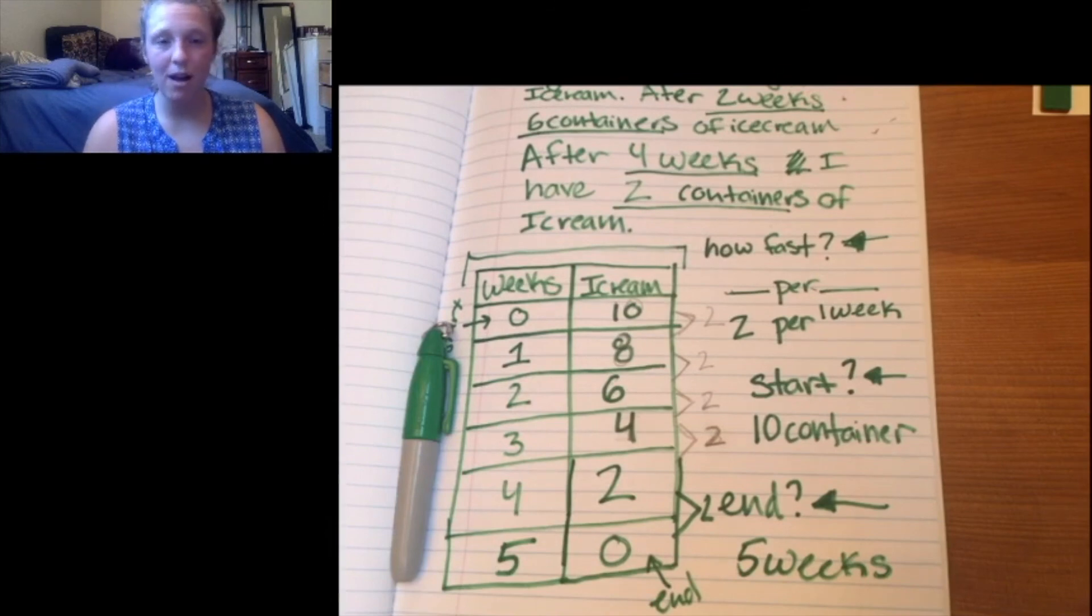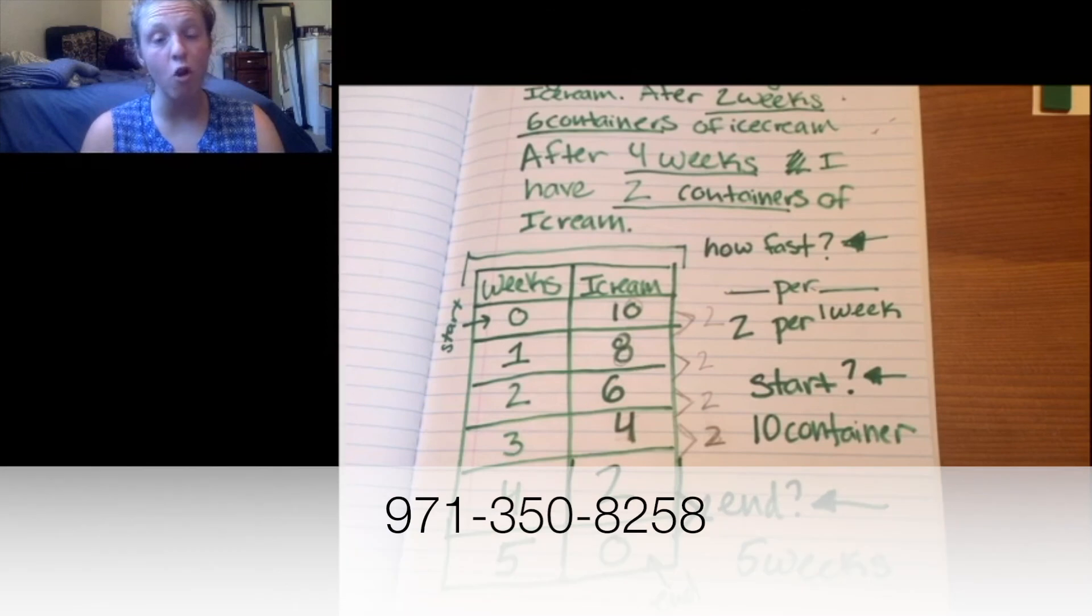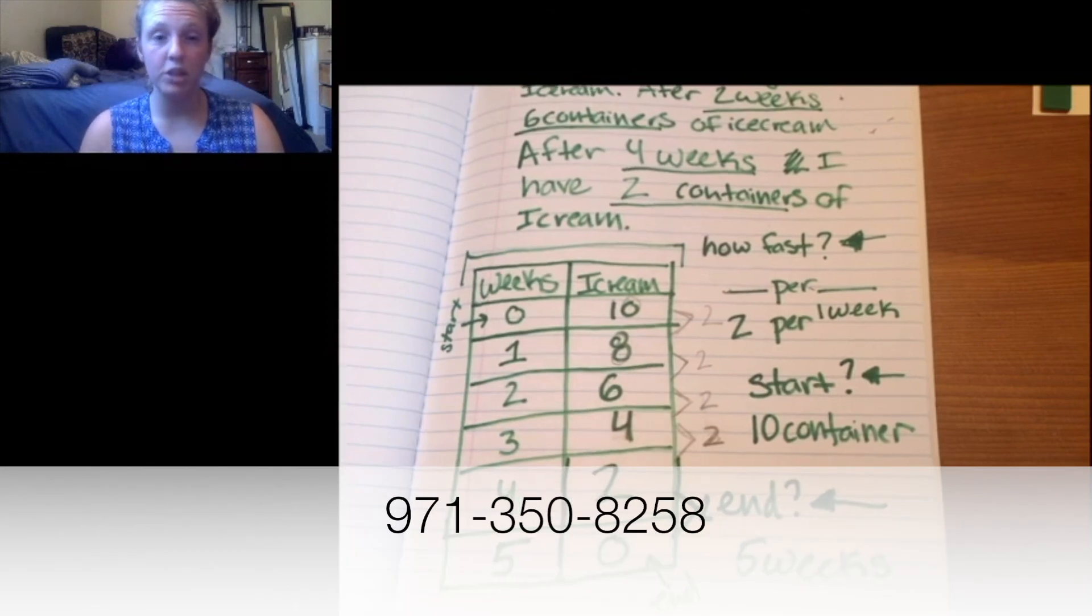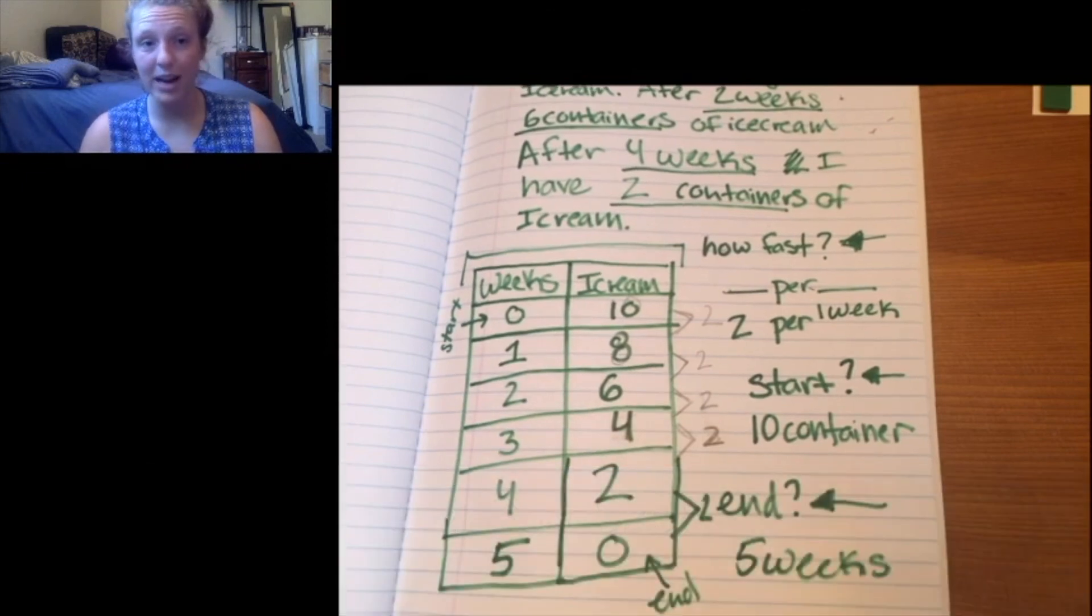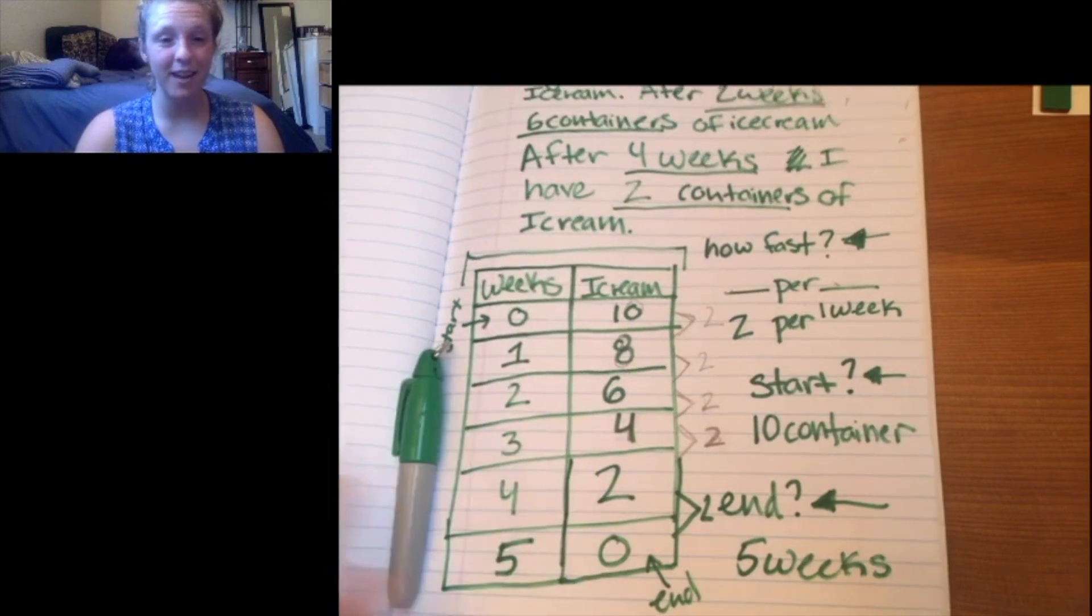You have some math to do. And good luck. The office hours today are from noon to 1:30 with challenge math from 2 to 3 o'clock. If you have any questions, you guys know my number, which is 971-350-8258. Feel free to text or call me at any point if you have any questions. Hopefully you guys are having a great day. Stay happy and healthy.